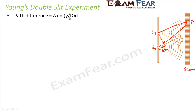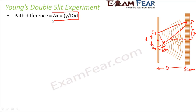The path difference is calculated as y divided by capital D into small d, where capital D is the distance of the screen from the slits, small d is the distance between the two slits, and y is the distance of point P from the center of the pattern on the screen. I am not going into the derivation here as that is already discussed in the Wave Optics video for Class 12 Physics.